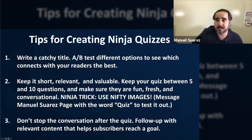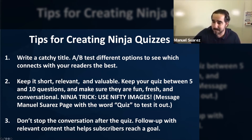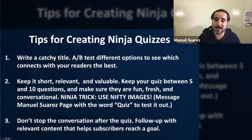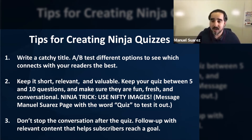Here are a few tips for creating ninja quizzes. Craft a title — test different options (A, B) to see which connects with your readers the best. Keep it short, relevant, and valuable. Keep your quiz between five and ten questions and make sure they are fun, fresh, and conversational.